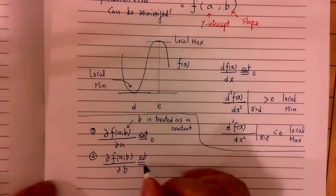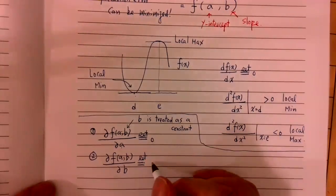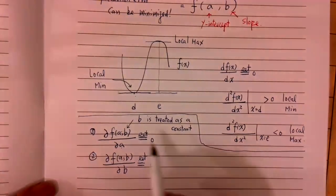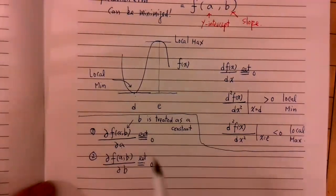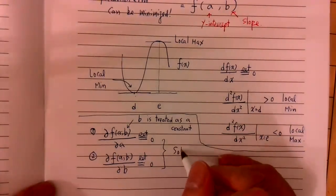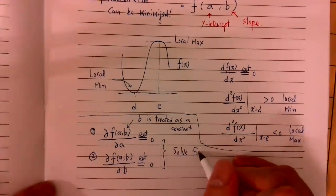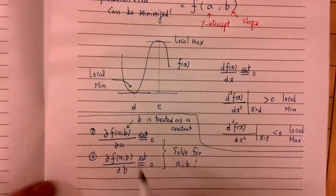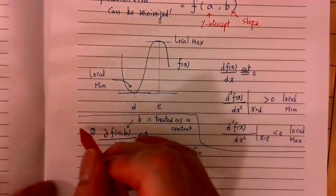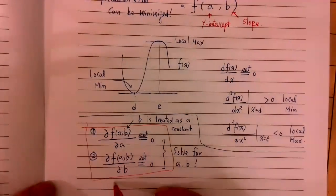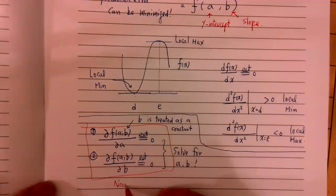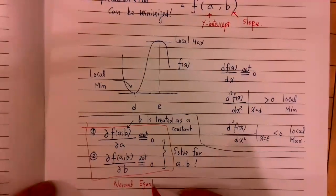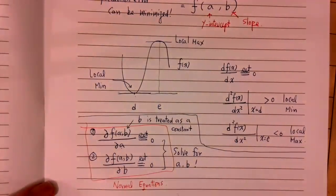Take the derivative, just like what you learn from calculus, and set it equal to zero. Then you have two unknowns with two equations. You solve for A and B. This equation in statistics is called the normal equation.